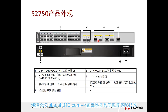A combo interface has both an electrical port and an optical port. Generally speaking, these two ports share one connection — meaning you can only use one at a time: either plug in a network cable or plug in a fiber optic cable, but you cannot use both ports simultaneously.